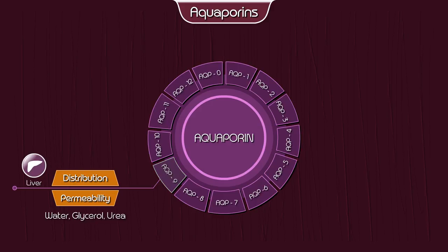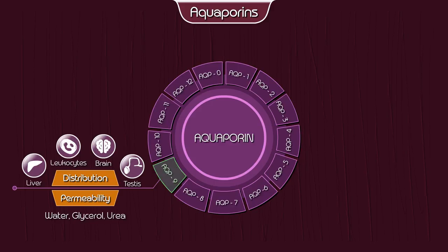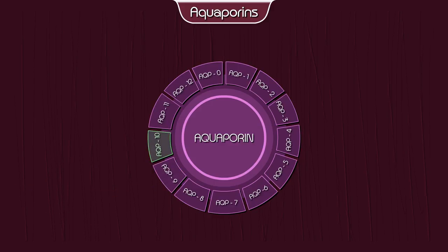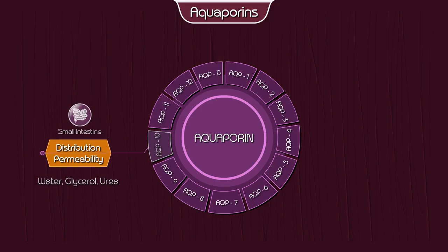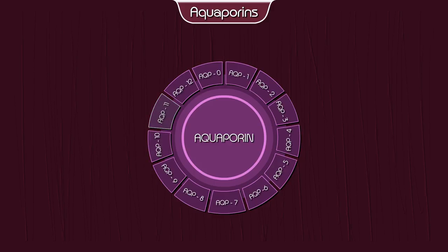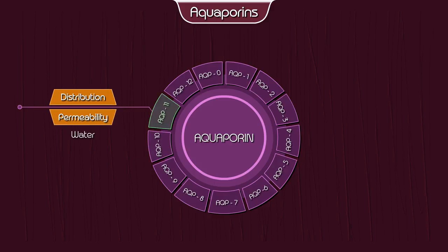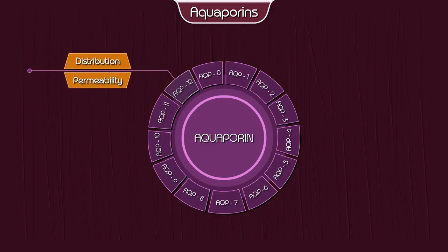Aquaporin 8 — permeability: water; distribution: kidney, liver, testes, intestine, and pancreas. Aquaporin 9 — permeability: water, glycerol, urea; distribution: liver, leucocytes, brain, and testes. Aquaporin 10 — permeability: water, glycerol, urea; distribution: small intestine.